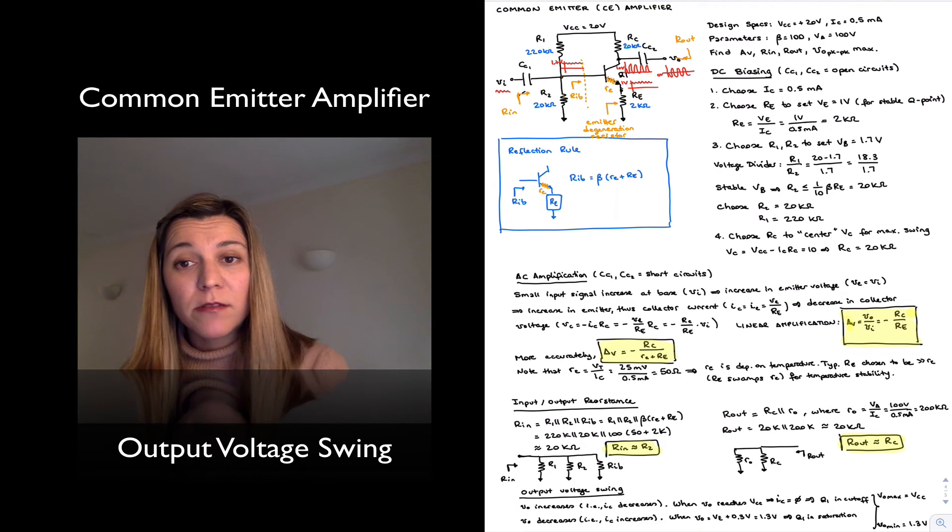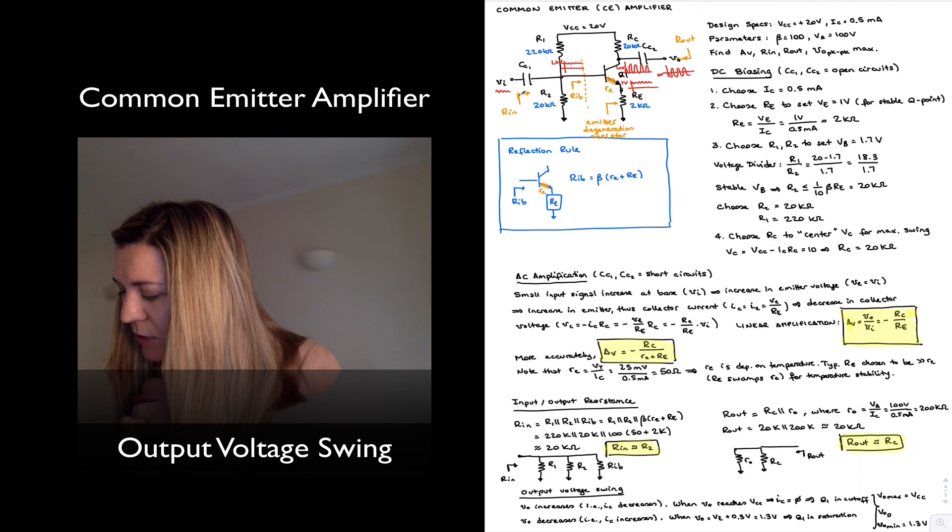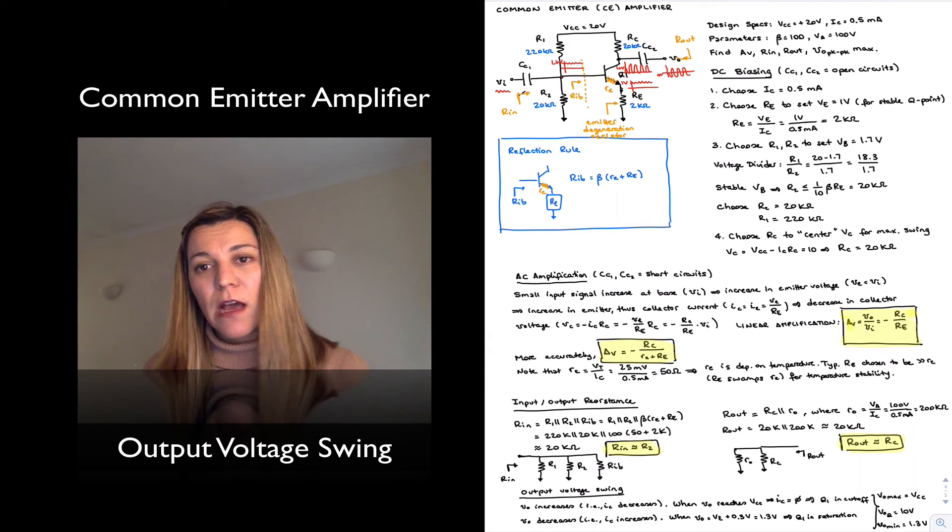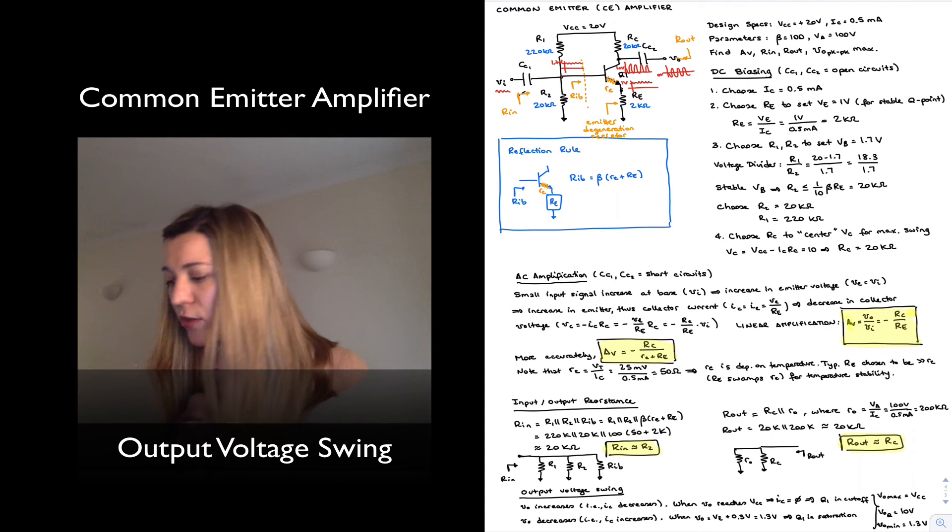Our nominal or quiescent point Vout, which we can call Vout sub Q, was actually 10 volts. On the positive side, we have all the way from 10 volts to 20 volts, which is VCC, so we have a signal swing of 10 volts.